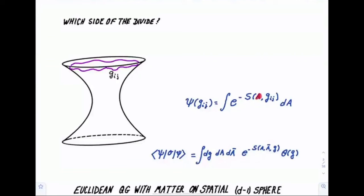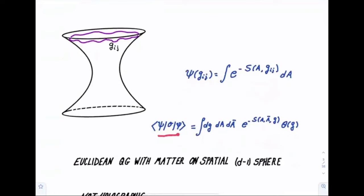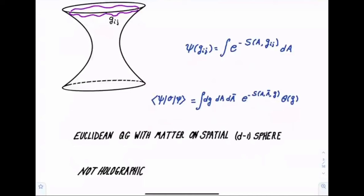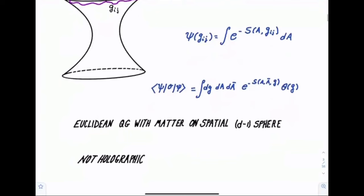We describe the Wheeler-DeWitt wave function on that cutoff surface by a conformal field theory. The partition function of a conformal field theory involving a set of operators A, those could be matter fields, a metric on the slice, not a bulk metric, but a metric on the slice that we slice off, and we construct parametrically in terms of the metric Gij a Wheeler-DeWitt wave function. The whole thing will have the look of a Euclidean quantum gravity problem with matter on a space-like D minus one sphere.